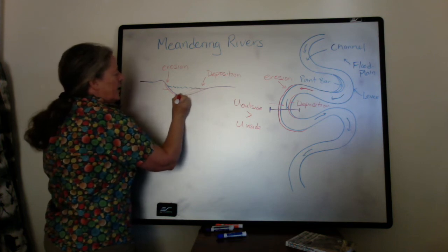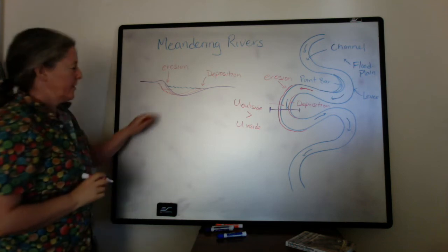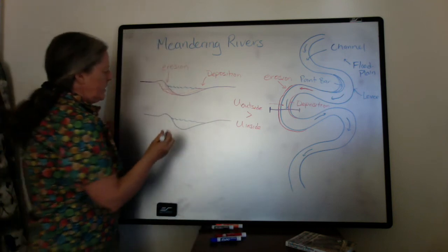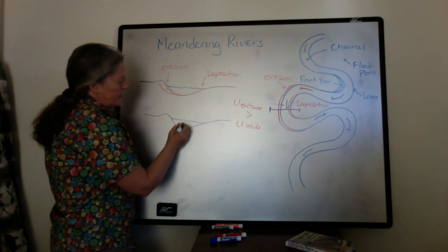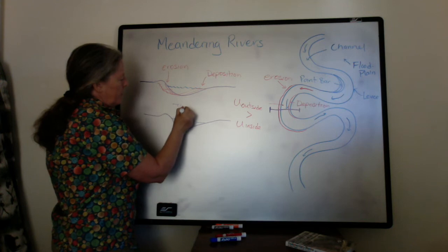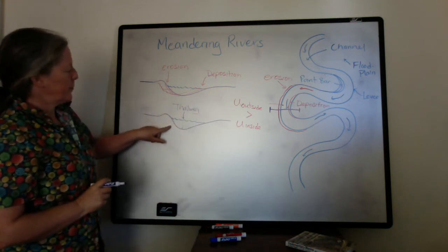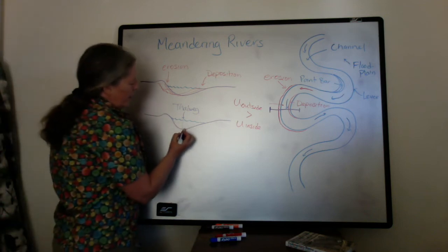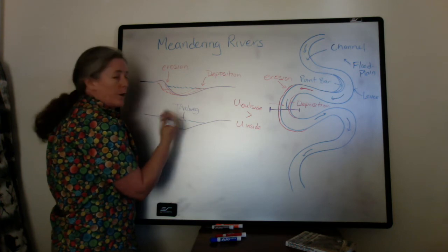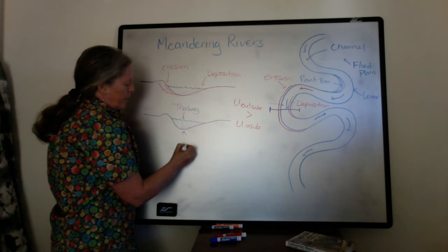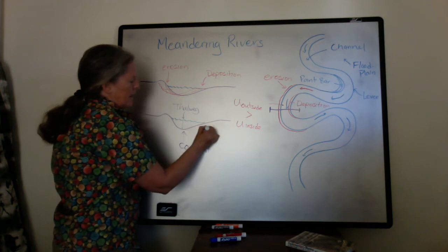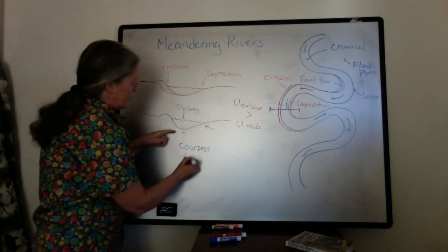We can look at the grain sizes likely to be deposited in the channel. We have the deepest point here with faster flow on this side — the deepest point is called the thalweg. On the outside of the bend relative to the thalweg is where you have erosion, and you have deposition on the inside. The point with the highest Reynolds number is where the coarsest sediment is deposited, as all grain sizes are transported there.